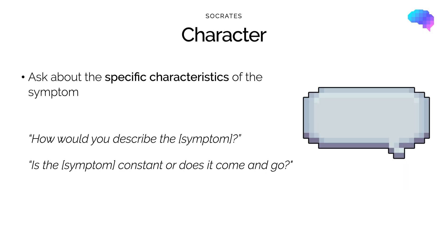The next component of SOCRATES is Character. Here we want to ask the patient about the specific characteristics of the symptom. For example, we could ask: how would you describe the symptom? Is the symptom constant or does it come and go? The questions you ask here will depend on the nature of the patient's presenting symptom, and this section may be less relevant for patients with systemic symptoms such as a fever.